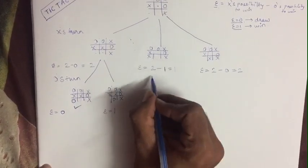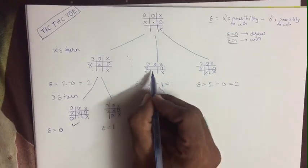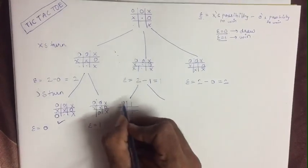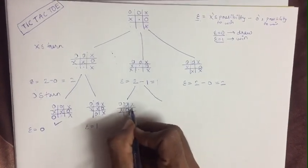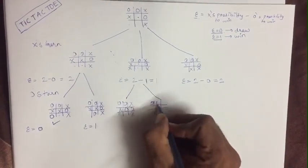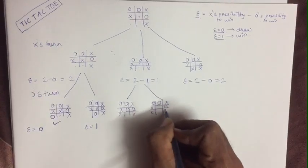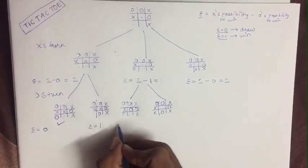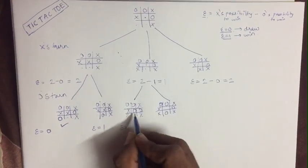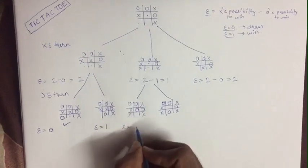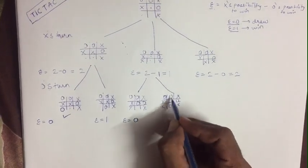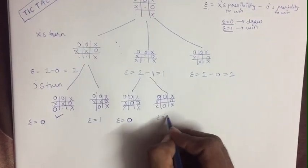Now this one — there will again be 2 possibilities. You can keep O here and O here also. First I have kept over here, and second one over here. Now calculate E for this one. Here winning possibility of X is equal to 1 and O possibility is also 1, so here E will be equal to 0. In this one, X possibility is equal to 1 winning and for O is also 1, so here E is again 0.